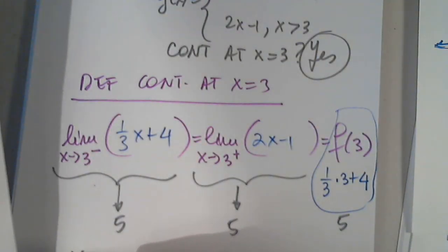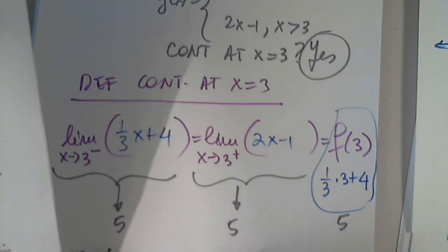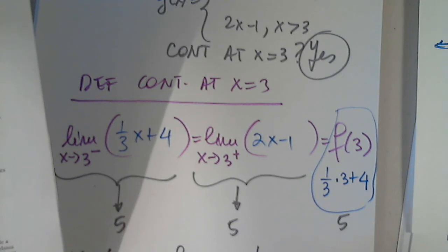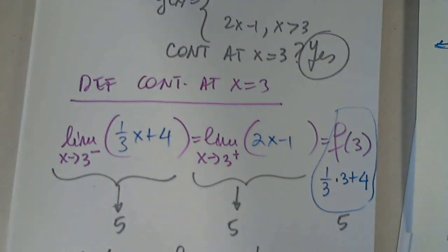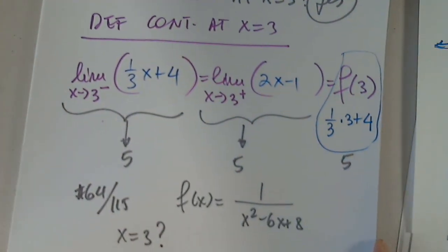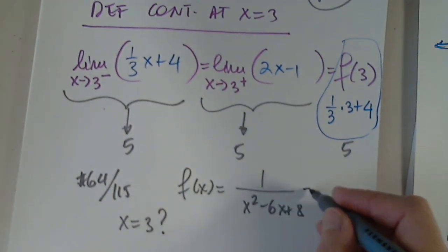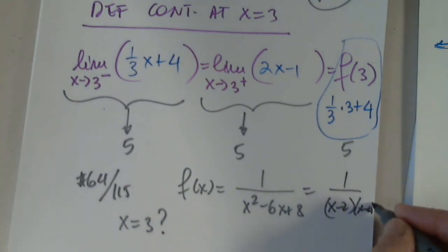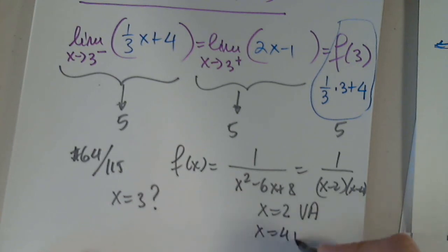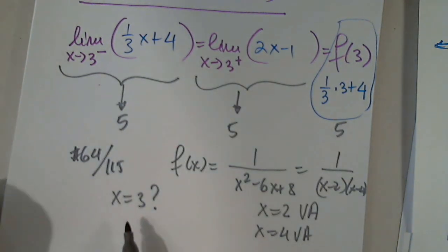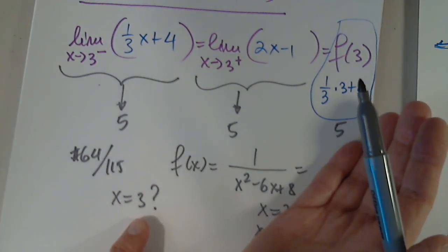I'd like to look at problem 64 on page 115. We are given f of x equals 1 over x squared minus 6x plus 8. Is it continuous at x equals 3? When we factor this function, we get x minus 2 times x minus 4. So x equals 2 and x equals 4 are both vertical asymptotes — the function will not be continuous there; it will have infinite discontinuity. However, I'm asked to study the function at x equals 3.